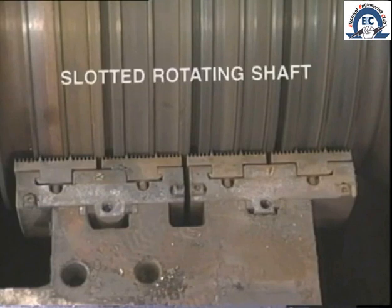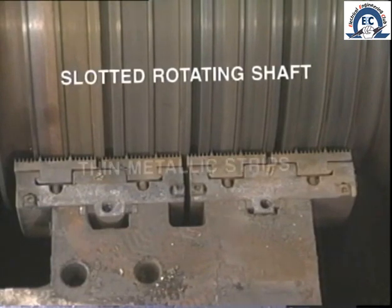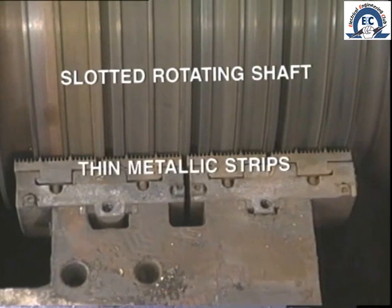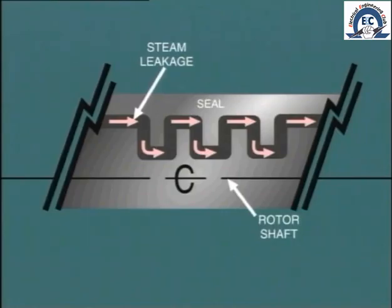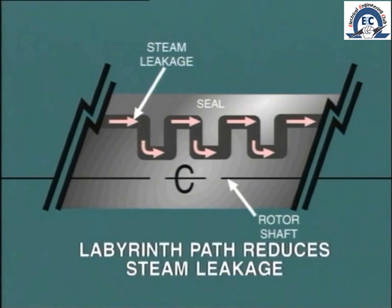The rotating portion on the shaft is slotted like this, while the stationary portion consists of thin metallic strips, which are pressed into the rotating grooves by very light spring pressure. The resultant labyrinth path considerably reduces the leakage of steam out or air in.